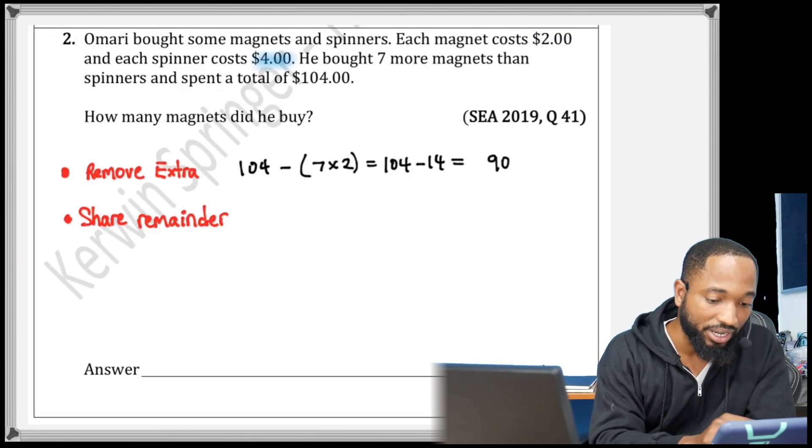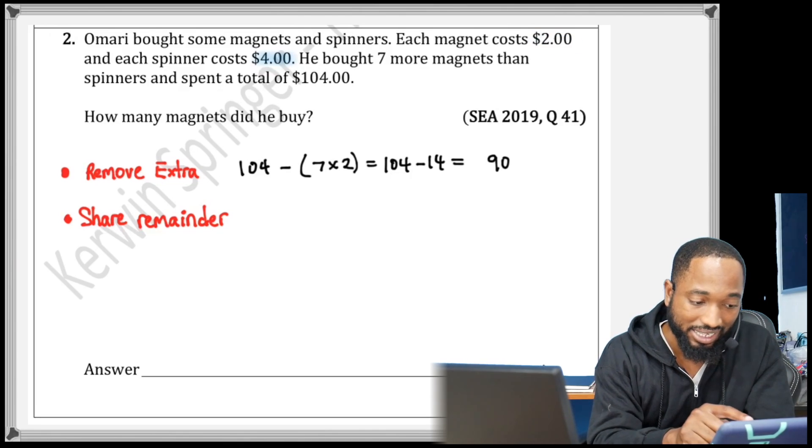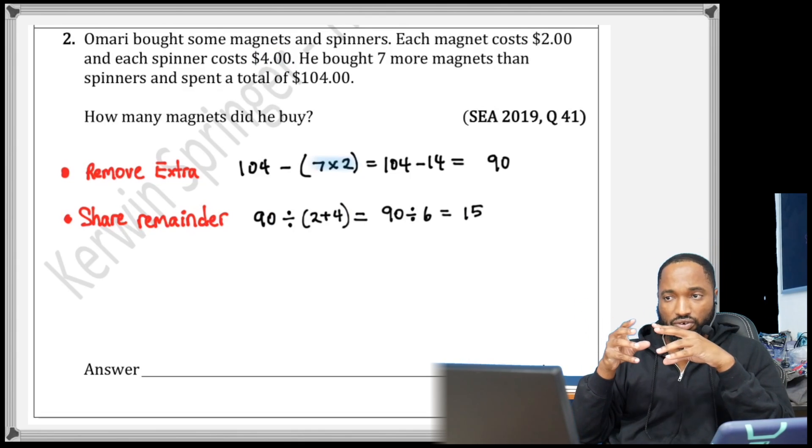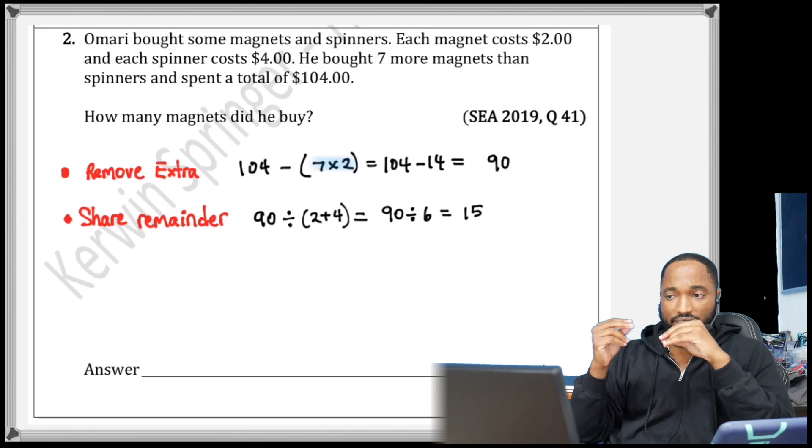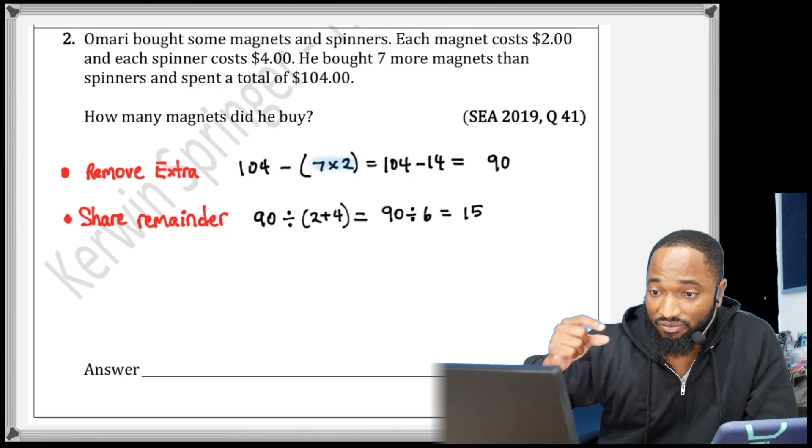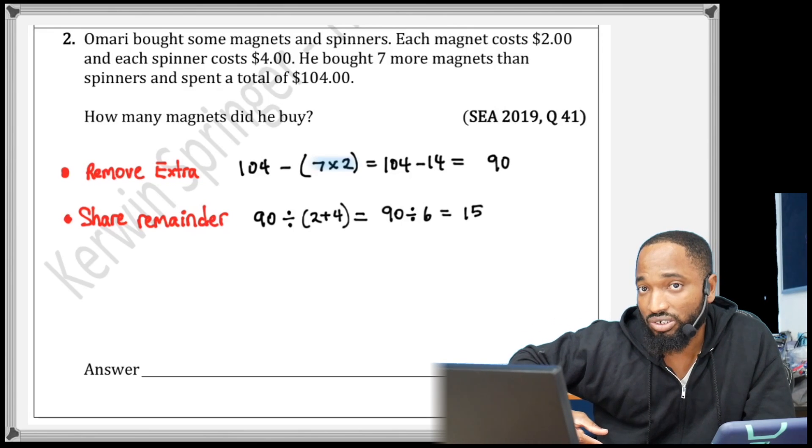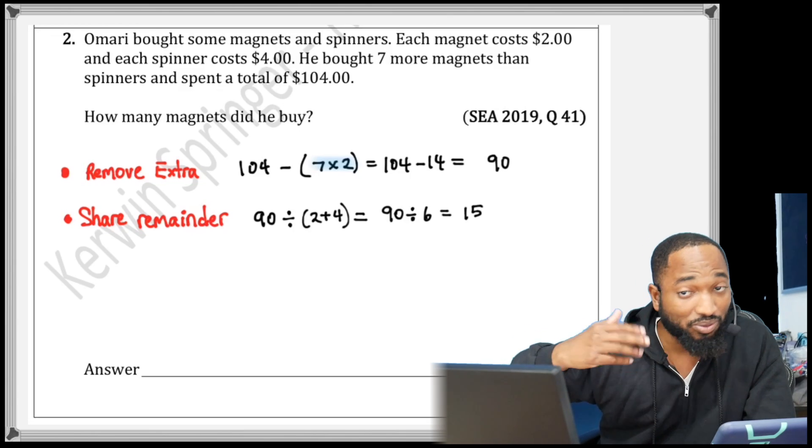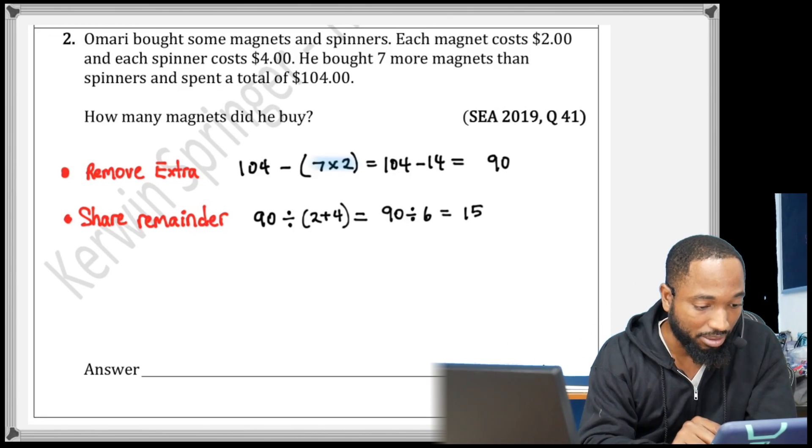The 4 for the spinner, the 2 for the magnet. That making sense? So we could be like this: $90 divided by 2 plus 4. $90 divided by 6 is 15. So it means 15 of each in terms of equal sharing.